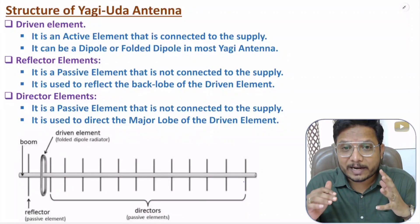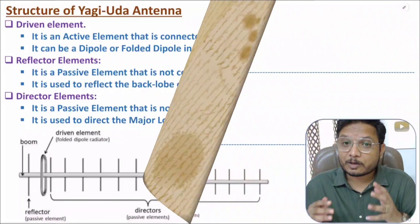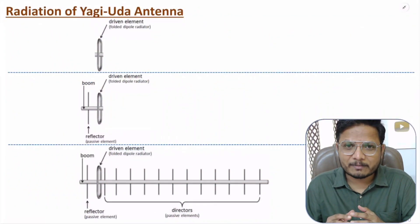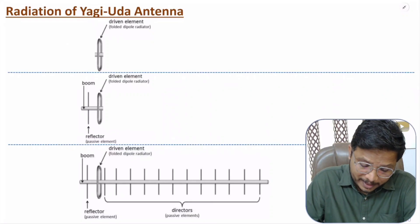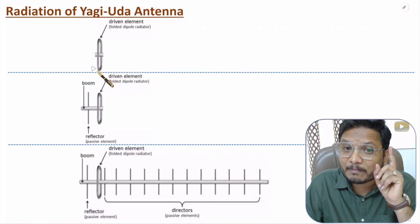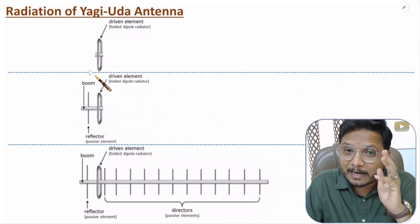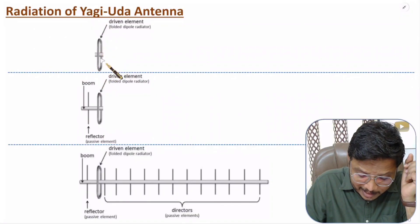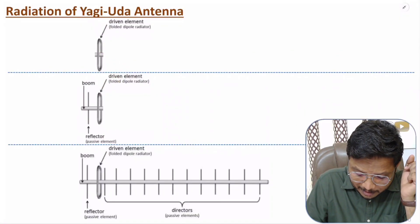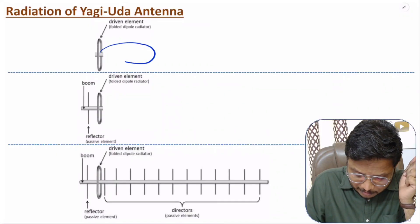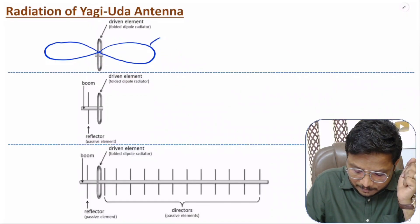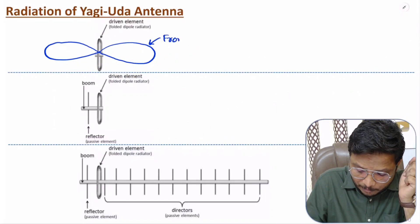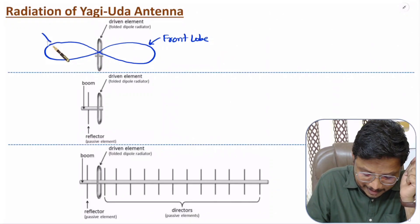Now I am going to explain how radiation happens with Yagi-Uda antenna. To understand the radiation mechanism, let us start with radiation by the driven element. The driven element can be a folded dipole or a dipole antenna. It will have radiation characteristics with two lobes — a front direction lobe and a back lobe.